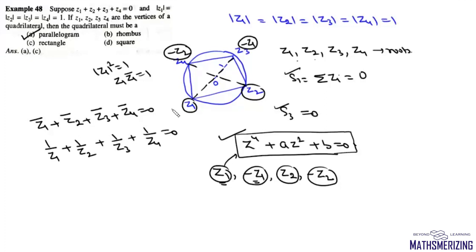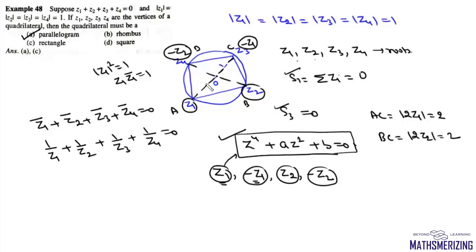Both diagonals are bisected at the origin, so this quadrilateral is a parallelogram — option A is correct. The length of diagonal AC is 2 times mod z1, which equals 2, and diagonal BD is 2 times mod z2, also equal to 2. Both diagonals are equal in length, so this is a rectangle — option C is correct.